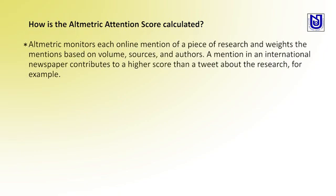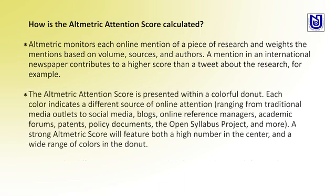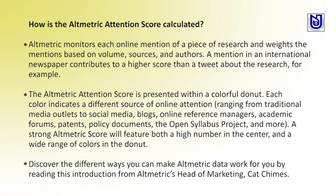Altmetrics monitors each online mention of a piece of research. A mention in an international newspaper contributes to a higher score than a tweet about the research. The Altmetric Attention Score is presented within a colorful donut, where each color indicates a different source of online attention, ranging from traditional media outlets to social media, blogs, online reference managers, academic forums, policy documents, open access repositories, and more.